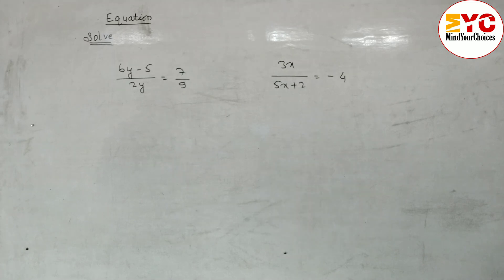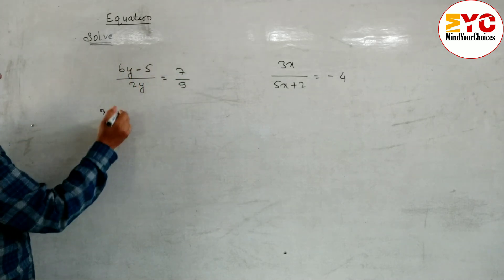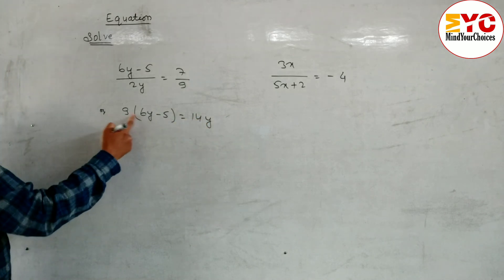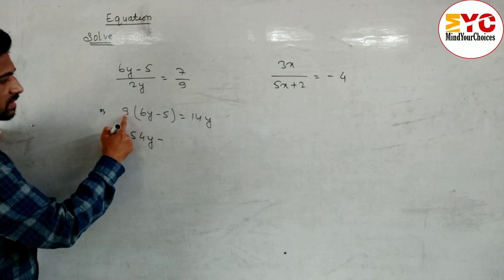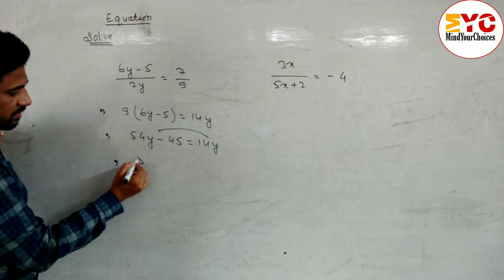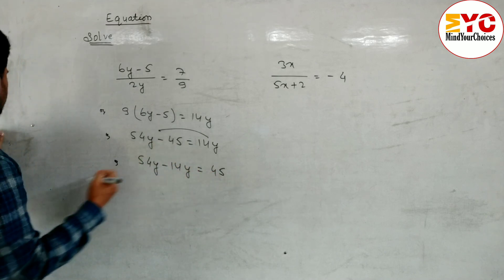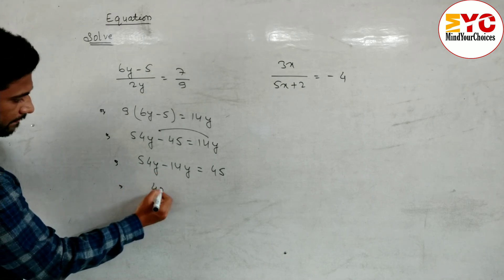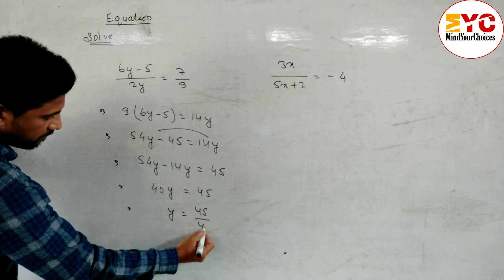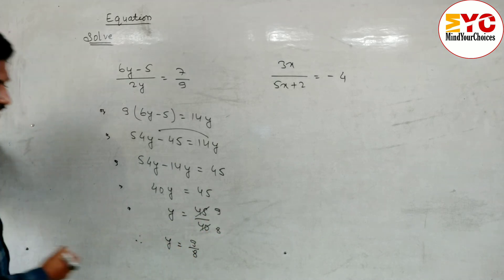Now look at next. The next question: 6y minus 5 by 2y is equal to 7 by 9. First of all we have to cross multiply: 9 into (6y minus 5) is equal to 7 into 2y which is 14y. Then multiply: 6 nines are 54, so 54y minus 5 nines are 45, is equal to 14y. After this we have to arrange like terms — 14y we have to take to the front. So 54y minus 14y is equal to 45 — 45 was minus so we write plus 45. When you subtract we get 40y is equal to 45. So y is equal to 45 by 40. We can cancel by 5 — 5 nines are 45 and 5 eights are 40, so value of y is equal to 9 by 8. You can write in the form of mixed fraction also.